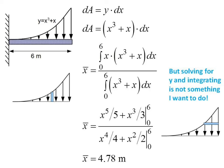I can do the x part. If I look at a vertical rectangle here, then dA is base times height, x cubed plus x, this is my height, times dx, and I can sub that in. My limits of integration are 0 to 6, and I can get a number that's 4.78 meters. Now, I don't want to do the solving for horizontal. So what can I do instead?